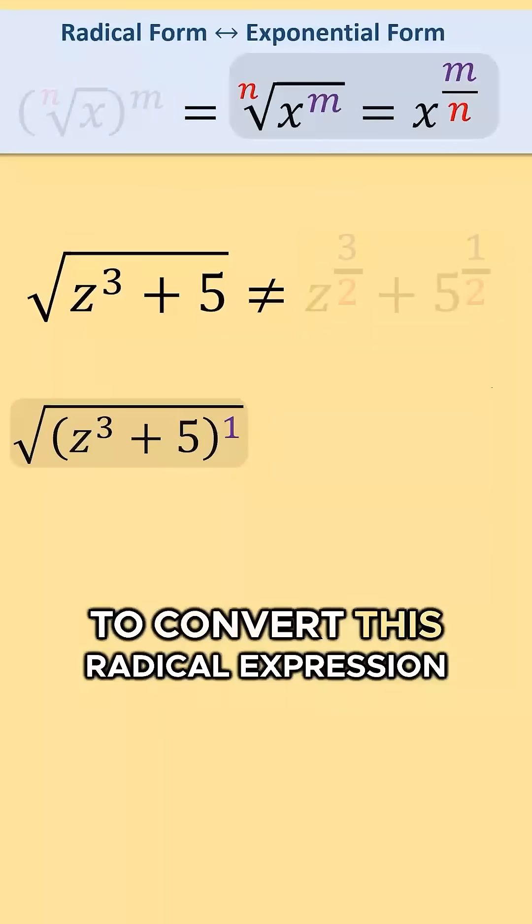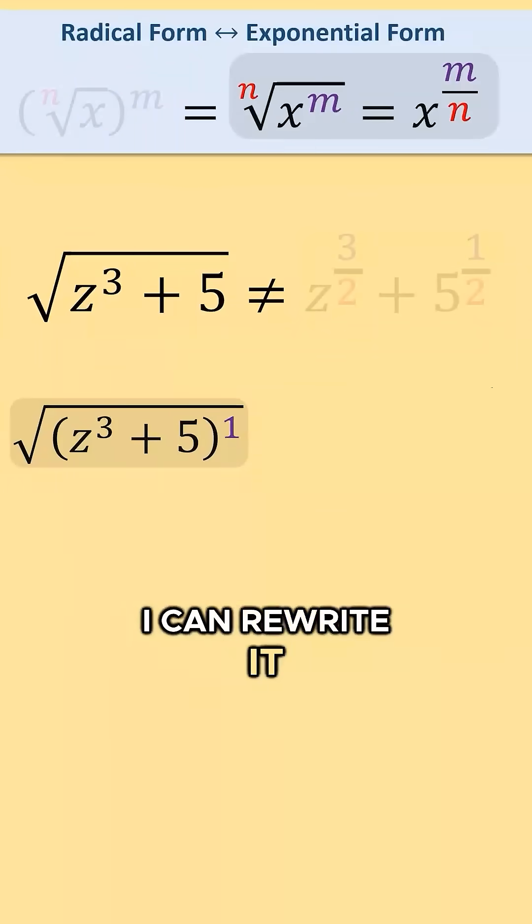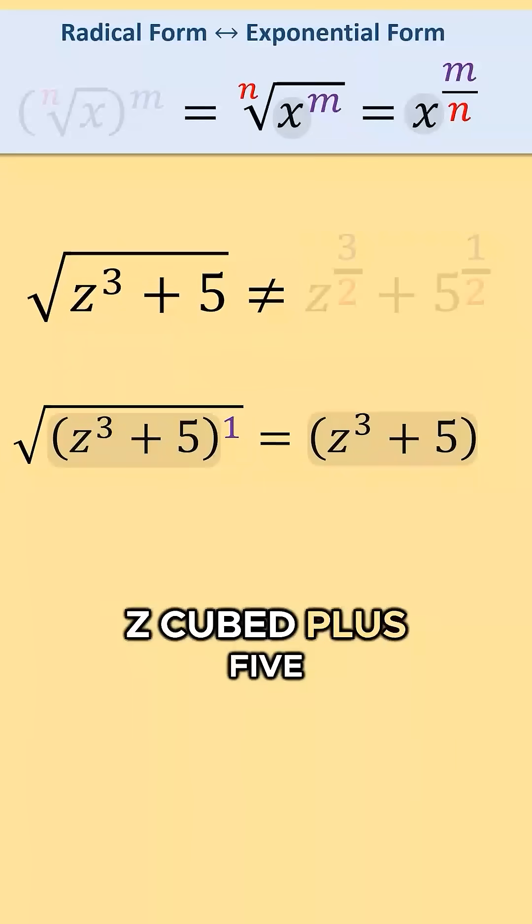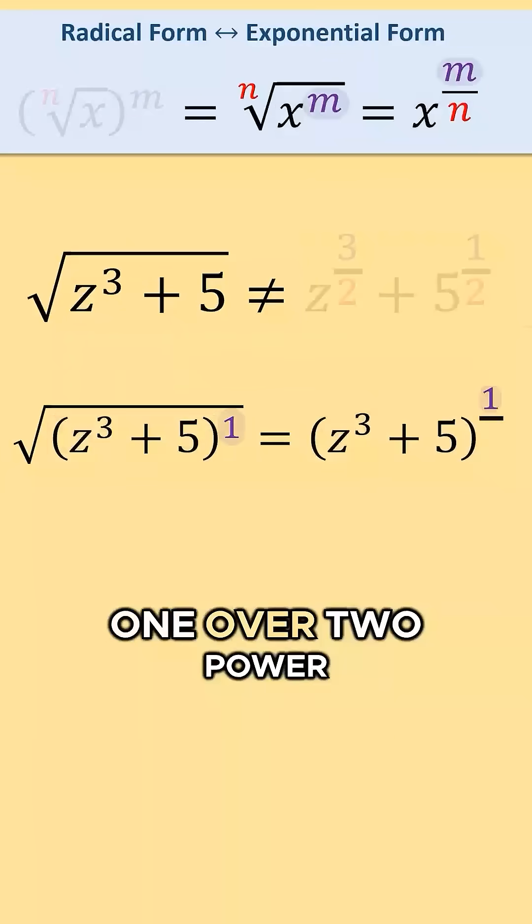So when I go to convert this radical expression, I can rewrite it as the quantity of z cubed plus 5, all raised to the 1 over 2 power.